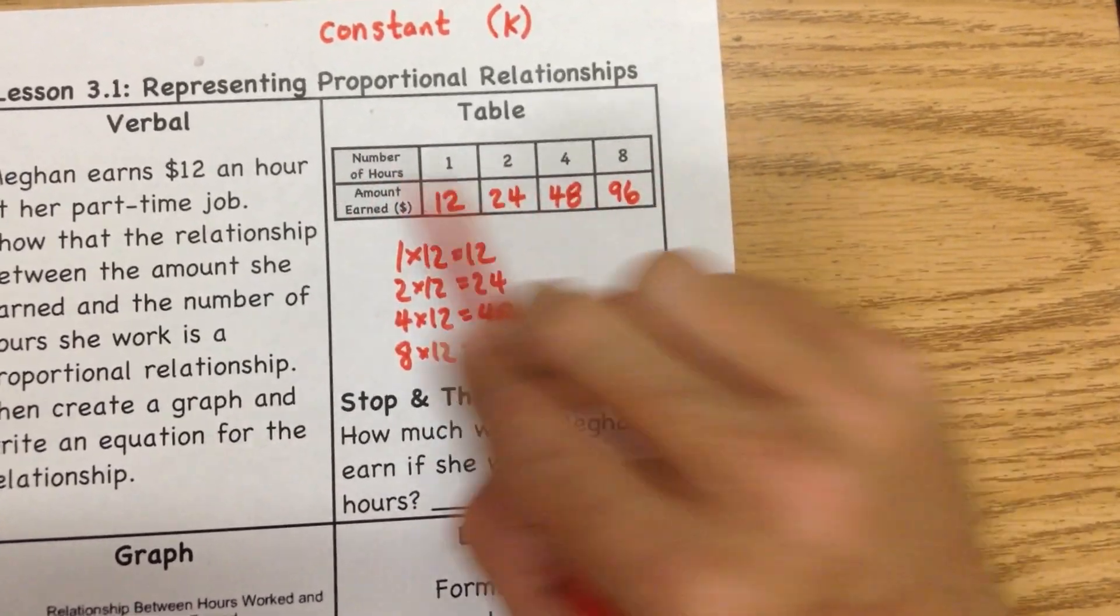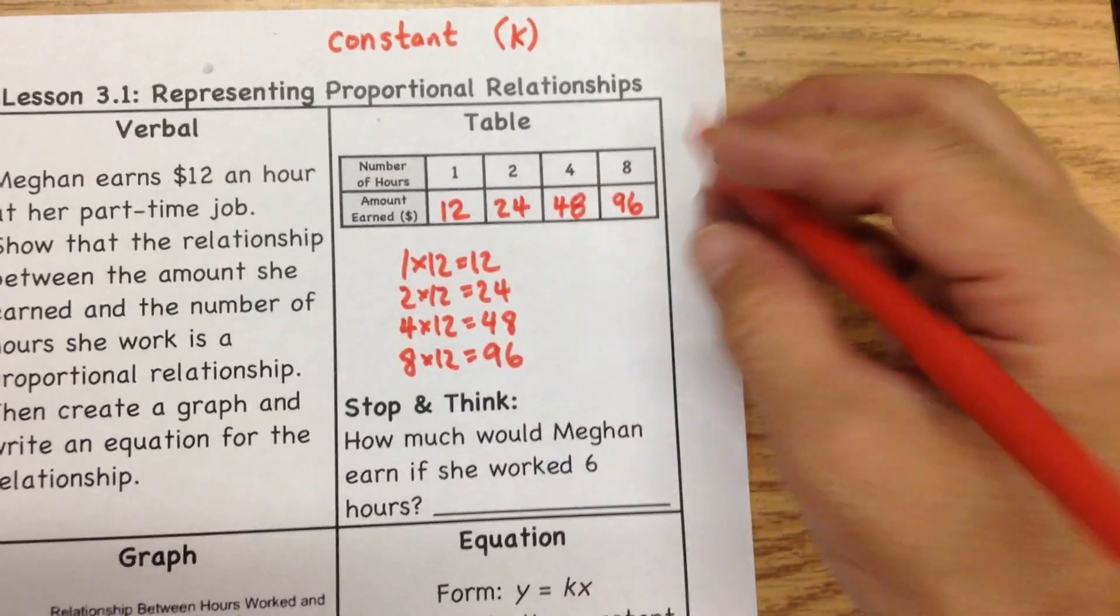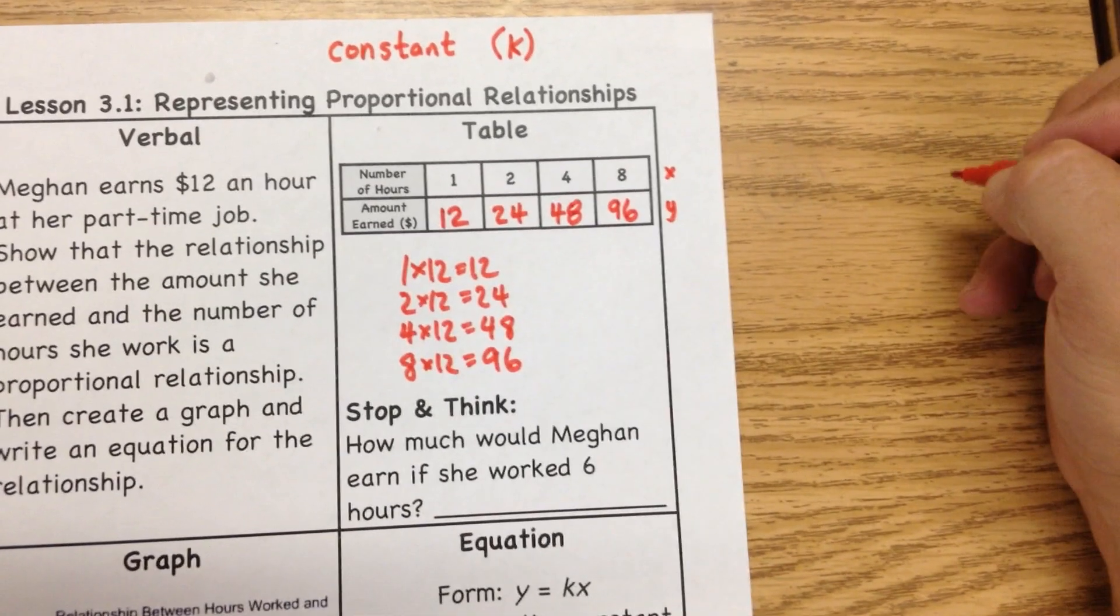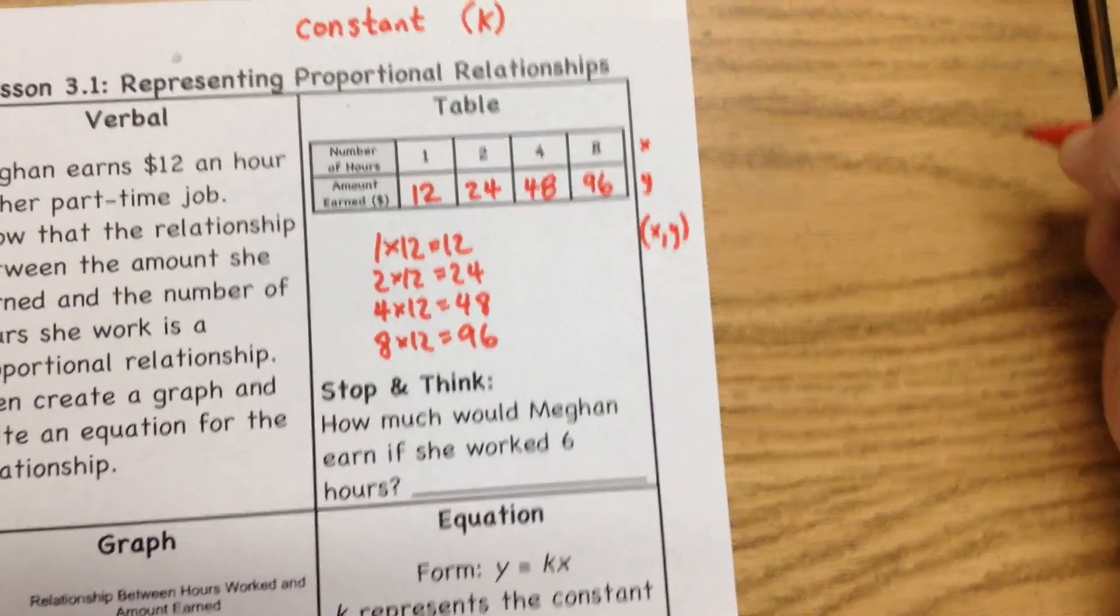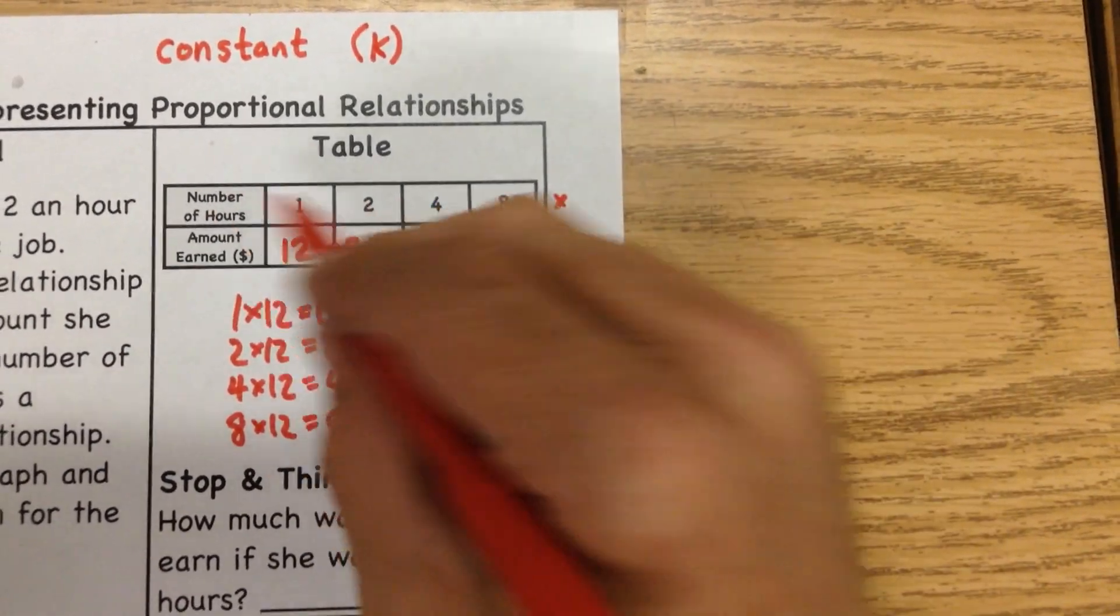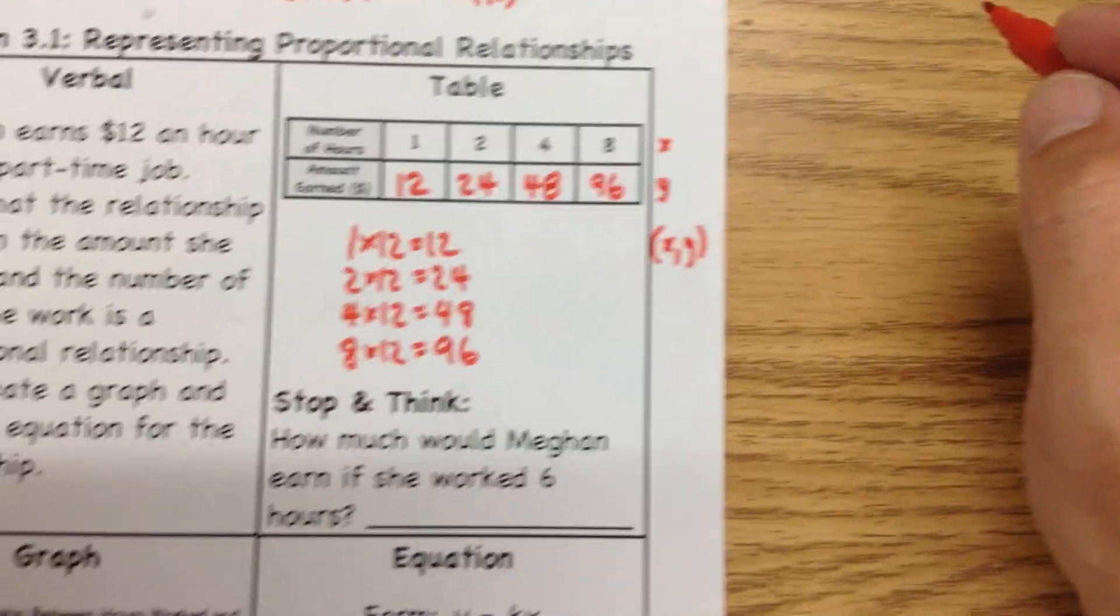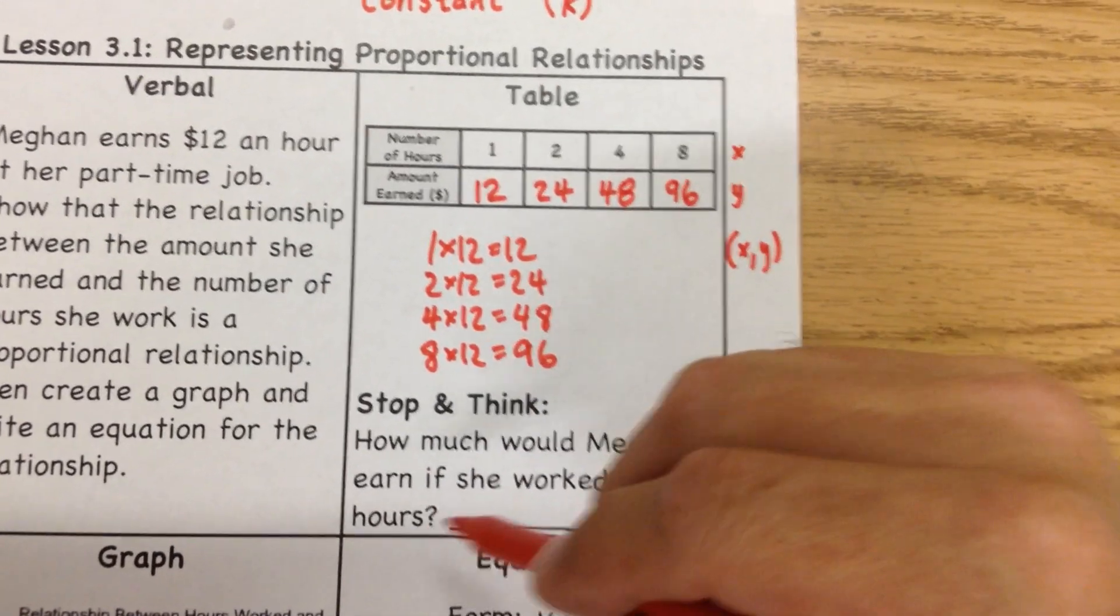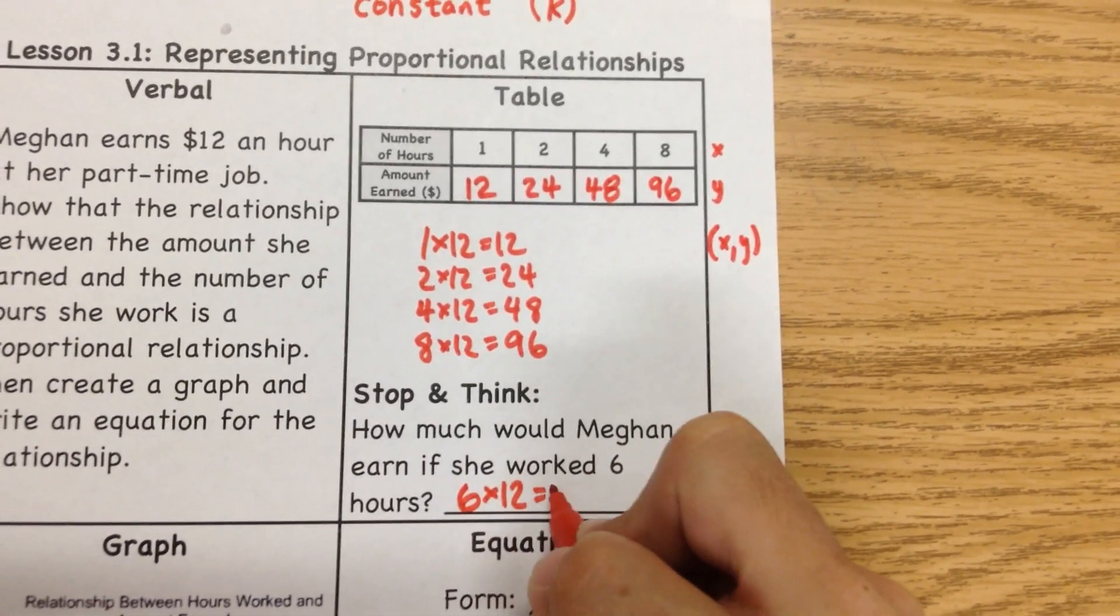Now, the numbers on top, those are going to represent our x values for our graph when we get down to it. So you might want to write a little x here and y. And when we make graphs, we always write them, the points always look like this: the first number is the x, the second number is the y. So this is going to represent our x values, this is our y values. Then usually they'll have a question after that. How much would Megan earn if she works 6 hours? Well, that would be a pretty simple one. 6 times 12 equals 72.